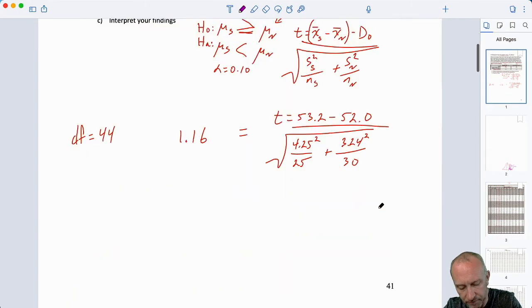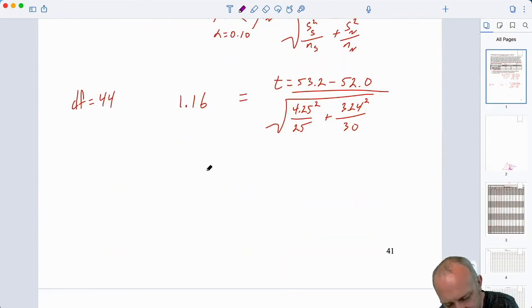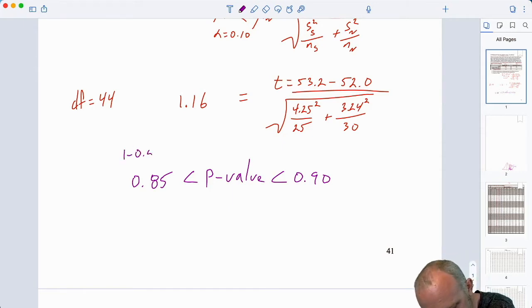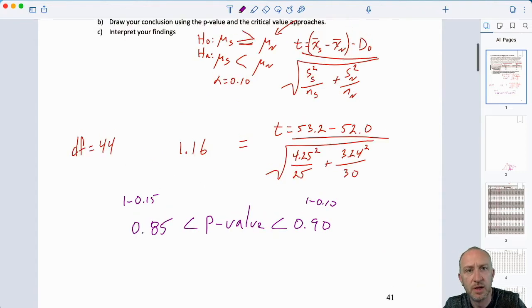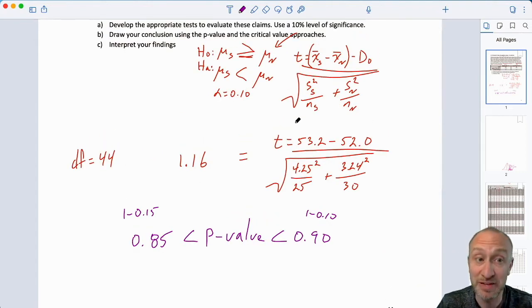So, if that is the case, then I have a p-value that is less than 0.9 and greater than 0.85, right? This is the 1 minus, oops, 1 minus 15. So, we've got a pretty massive p-value here.